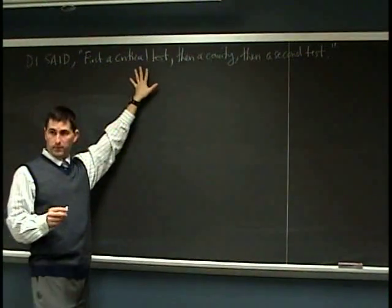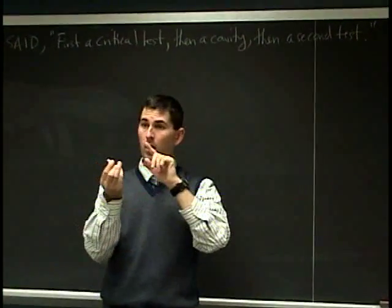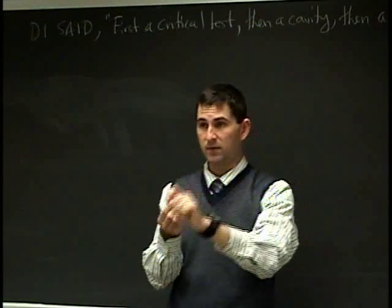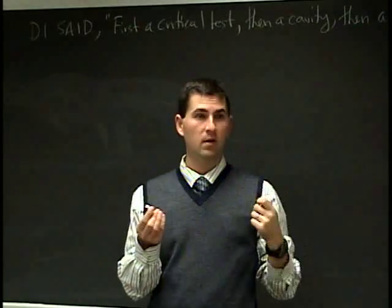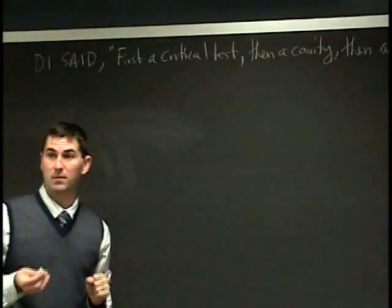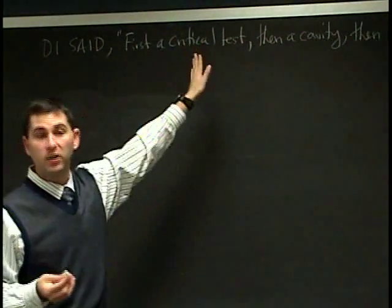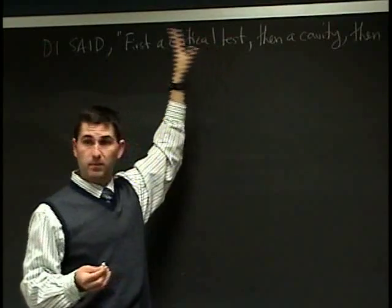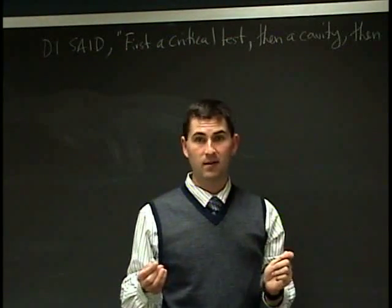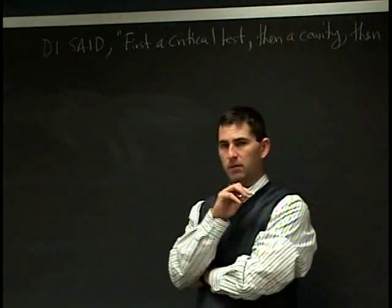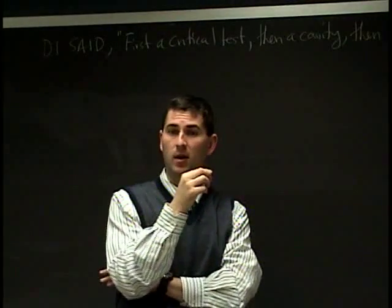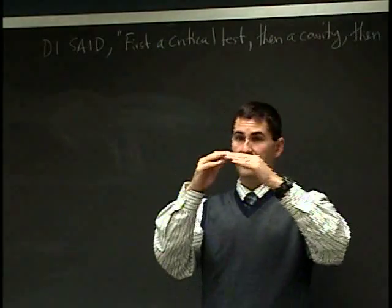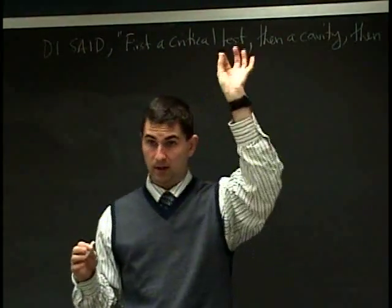First, a critical test — so we find the critical numbers. The critical numbers were where the derivative was zero, or did not exist. But there's a little caveat there: the derivative doesn't exist, but those points are in the domain of the original function. So we almost got into trouble last time because we added some critical points that you shouldn't. The reason why you look at those critical points is because those are the only possible places you can get local maxes and local mins.